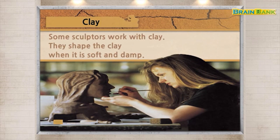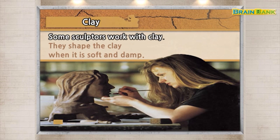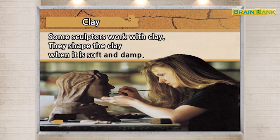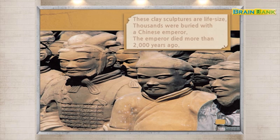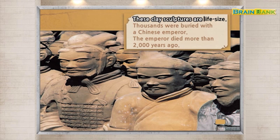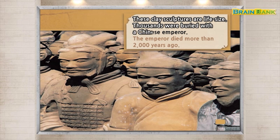Clay. Some sculptors work with clay. They shape the clay when it is soft and damp. These clay sculptures are life-size. Thousands were buried with a Chinese emperor. The emperor died more than 2,000 years ago.